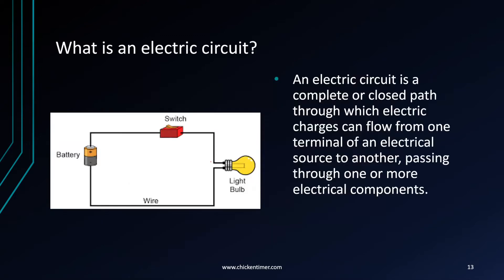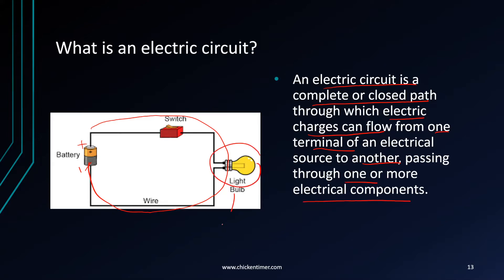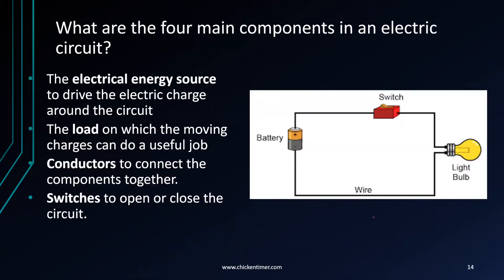The rest of the symbols are more important. You need to know what an electric circuit is — this is from primary school. An electric circuit is a complete or closed loop through which electric charges can flow from one terminal to another, from the positive terminal to the negative terminal. Charges can flow through one or more electrical components. The first of the four main components is the electrical energy source, which is the battery — its job is to drive the charge around the circuit.